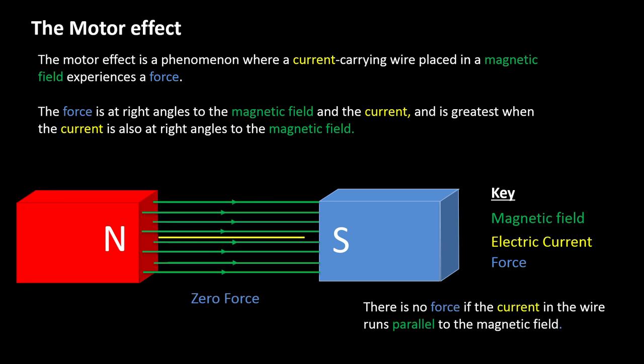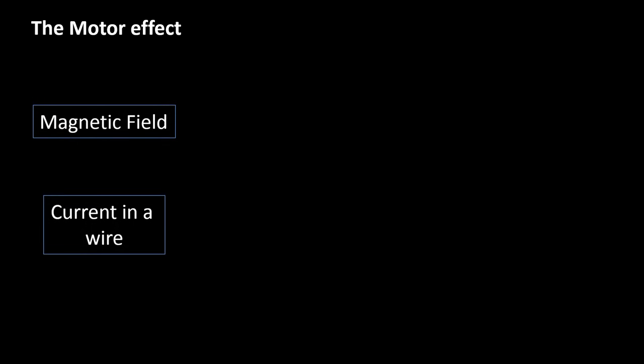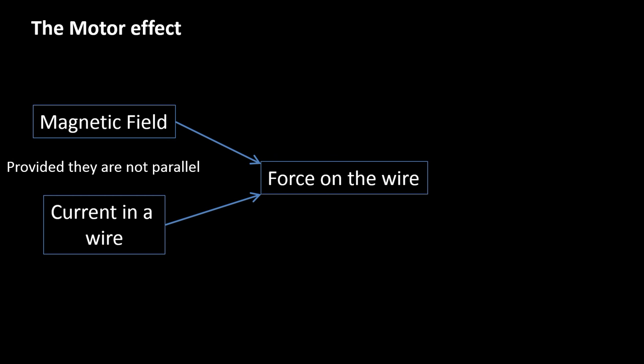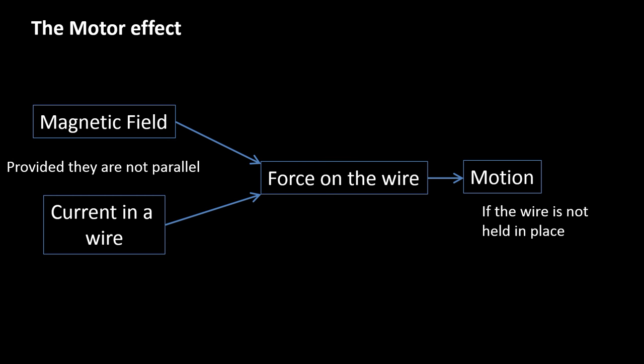The last thing to note is that if you have the current flowing parallel to the magnetic field — so the wire is pointing along the magnetic field lines — then there will be no force produced at all. No matter how much current you put through it, it won't produce a force on that wire. So that's the motor effect. In summary, to get a force on our wire we need a magnetic field and a current in the wire that are not parallel to each other. That will produce a force on the wire, and usually the wire will start to move — provided we're not clamping it in place. This is the basis for producing an electric motor.